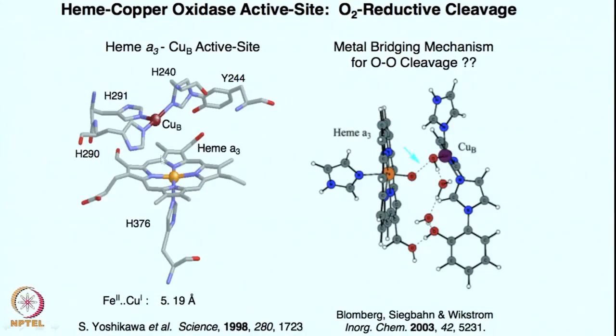You have seen how the copper center is oriented right in front of the heme, with a 5.19 angstrom distance between iron and the copper center. One of the major queries that need to be answered is how this 4-electron and 4-proton process is taking place so that oxygen can be converted to water in a perfectly catalytic manner.